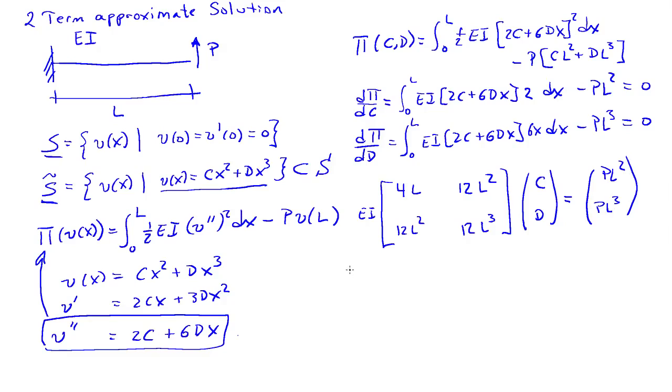You can easily solve this and find that C equals PL over 2EI, and D equals minus P over 6EI. So our final approximate solution is PLx squared over 2EI minus Px cubed over 6EI.